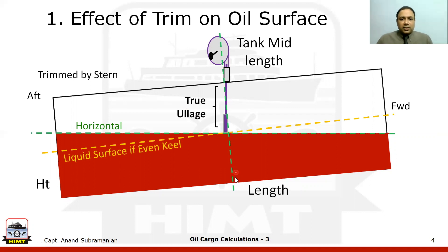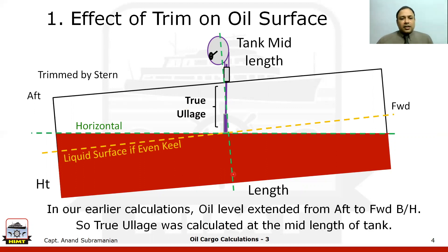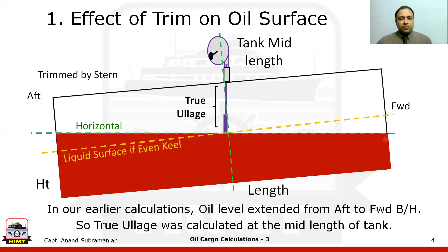From here we can find out what is the depth of the oil, and from there we can find out the volume and the metric tons. In our earlier calculations — that is the trim calculations in part 2 — the oil level extended from the aft bulkhead to the forward bulkhead. When such a condition applies, we can use our normal formulas and the true ullage is calculated at the middle of the tank.